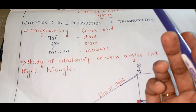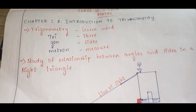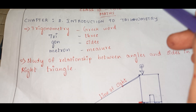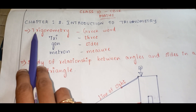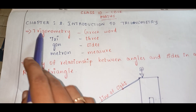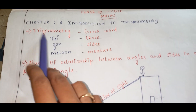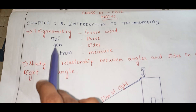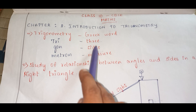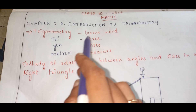Trigonometry is a very new word for you guys and I know that. First of all, before getting into the chapter, let us know what this word means. Trigonometry is actually a Greek word. Tri means three, Gron means sides, and Metron means measure. So, Trigonometry means three sides measure, or measurement of three sides.